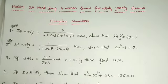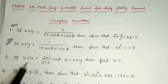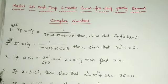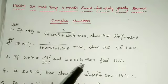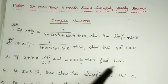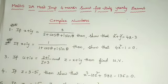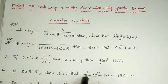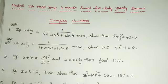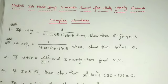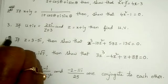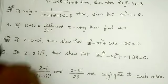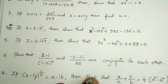Next one: if u plus iv is equal to 2 plus i by z plus 3 and z is equal to x plus iy, then find u and v. Next one: if z is equal to 3 minus 5i, then show that z cubed minus 10z squared plus 58z minus 136 is equal to 0. This is also a most important question, most frequently repeated question.